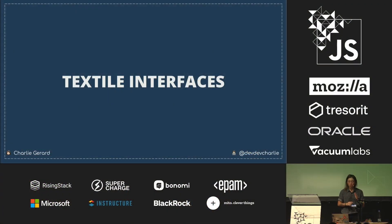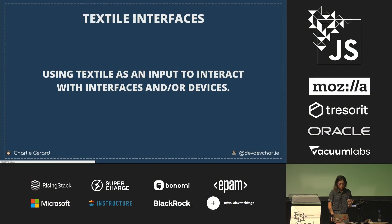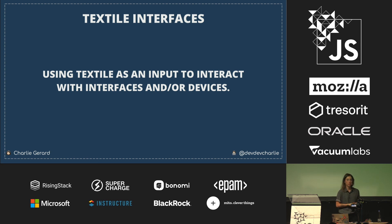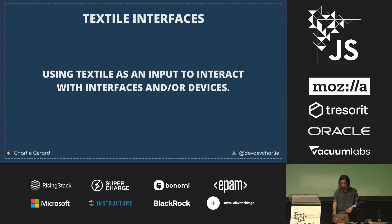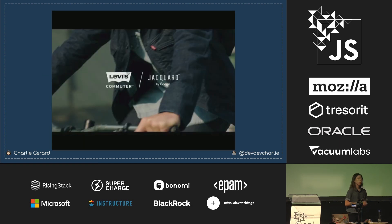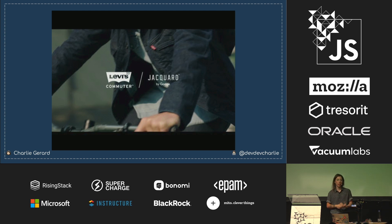What we're going to talk about today is textile interfaces. A quick definition: it's using textile as an input to interact with interfaces and devices. The main inspiration for this talk is something I came across about three or four years ago called Project Jacquard — a collaboration between Google and Levi's to create a connected jacket.